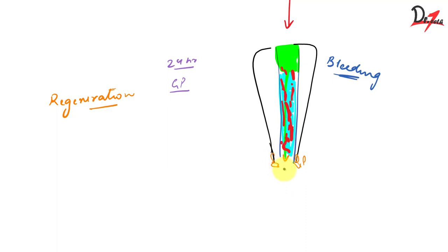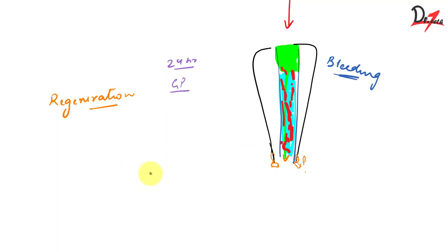Once the blood clots inside the canal, MTA is placed over it and allowed to set for 24 hours; the patient is then recalled for a permanent restoration. During follow-up visits over the coming months, we look for radiographic signs of apical closure due to revascularization of the pulp. By far the most commonly used technique in today's clinical scenario is the MTA plug technique, which is more predictable, easier, and short-term. This completes the endodontic management of the immature permanent tooth.